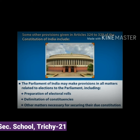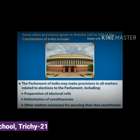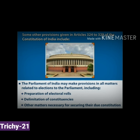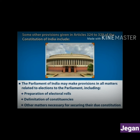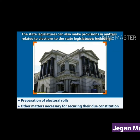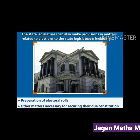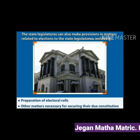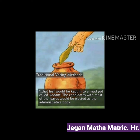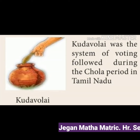Some of the provisions given in Articles 324 to 329 of the Constitution of India include: the Parliament may make provision with respect to all matters relating to elections to Parliament, including the preparation of electoral rolls and all other matters necessary for securing the due constitution. Do you know — Kudavali was a system of voting followed during the Chola period in Tamil Nadu.